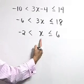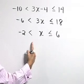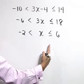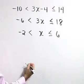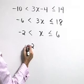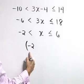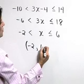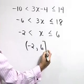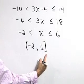So our inequality solution is all numbers x that are greater than negative 2 and less than or equal to 6. In interval notation, we would write this as negative 2 with the parenthesis around it, showing that it is not included, up to and including 6 with a bracket, showing that the 6 is included.